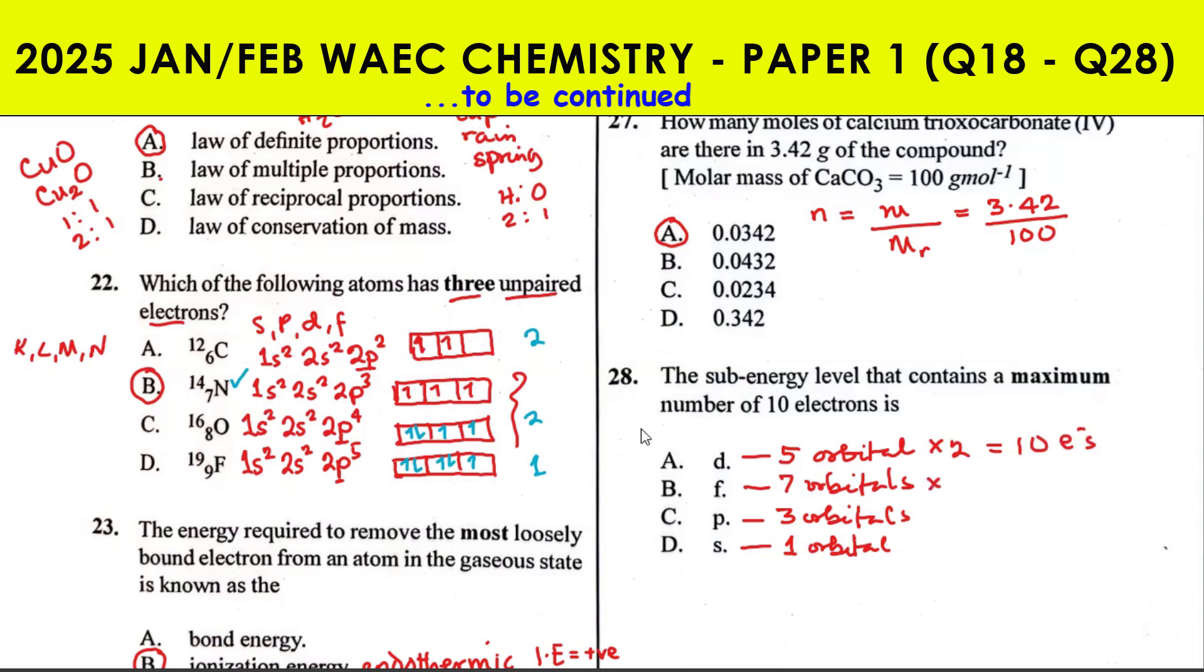The answer to the question - which sublevel contains the maximum number of 10 electrons - is d.